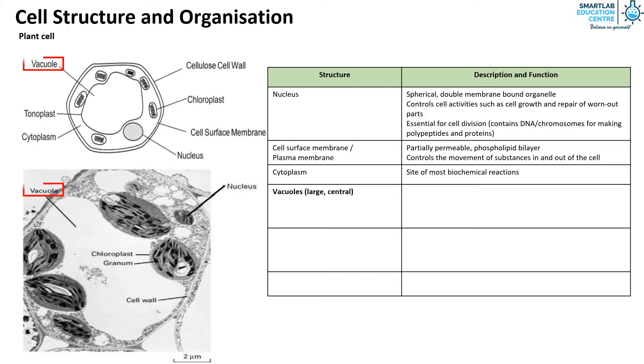The vacuoles of plant cells are large and central. They are also membrane-bound, fluid-filled space. It contains soluble sugars, pigments, amino acids or waste products, but it doesn't contain starch. It has a membrane called tonoplast.